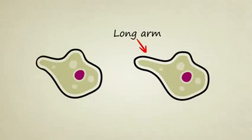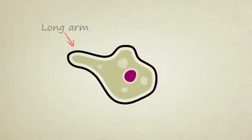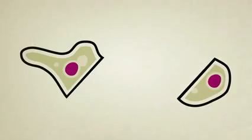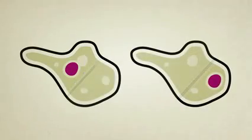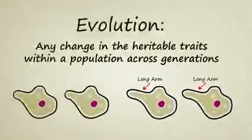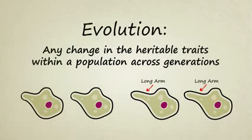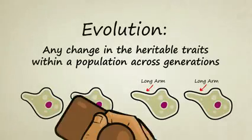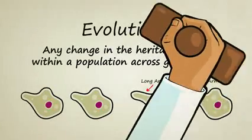If he survives long enough to grow and reproduce, that extra stretchy arm, which is now coded for in his DNA, will be passed on to his children. Evolution — any change in the heritable traits within a population across generations — has officially occurred.